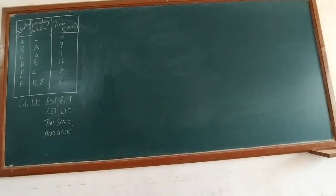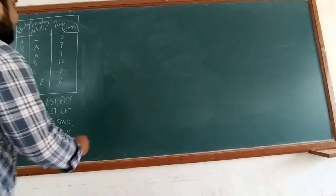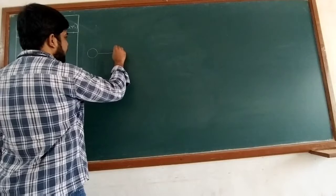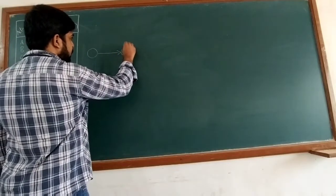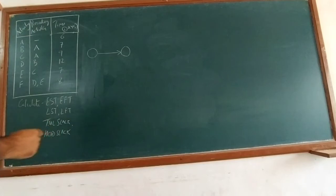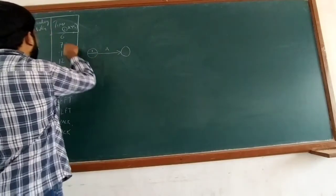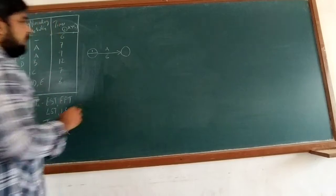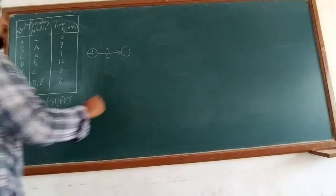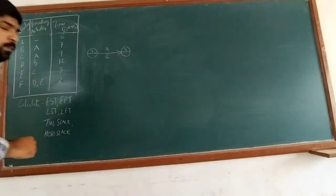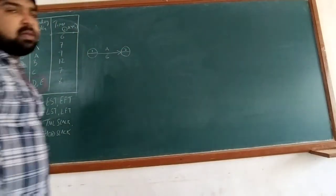The first activity, A, doesn't have any preceding activity, so we start with it. We will name the starting node as 1. The name of the activity is A and it requires 6 days to complete. The ending node we number as 2.